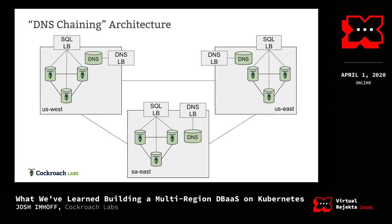Here's the picture of the multi-region cluster with two additions: the green box is the Kubernetes DNS service for each region, and the load balancer attached to it is the external load balancer spun up via a Service of type LoadBalancer. If a node in US West wants to talk to a node in another region, it sends a request to its Kubernetes DNS service, which proxies that request to the DNS load balancer for the other region. That load balancer routes the request to the DNS service for that region, which responds with an IP address, and that IP address is routable given the way GCP VPCs work.